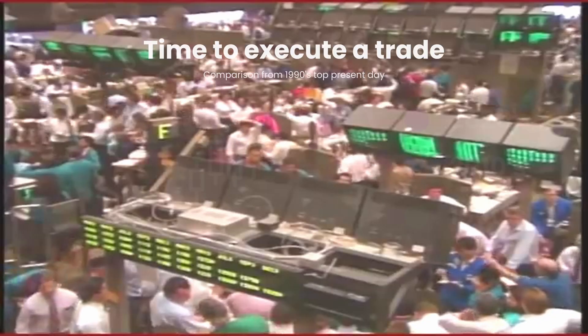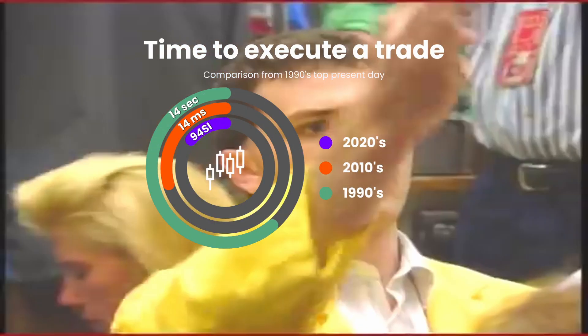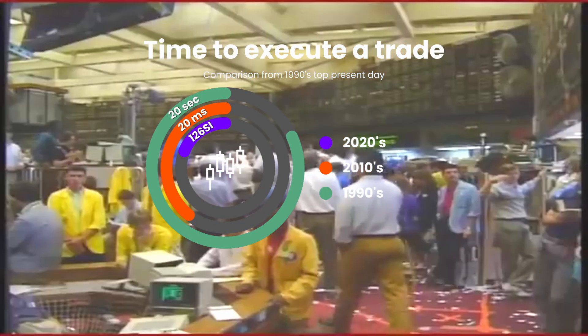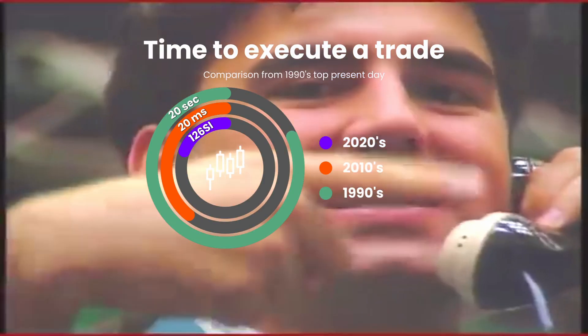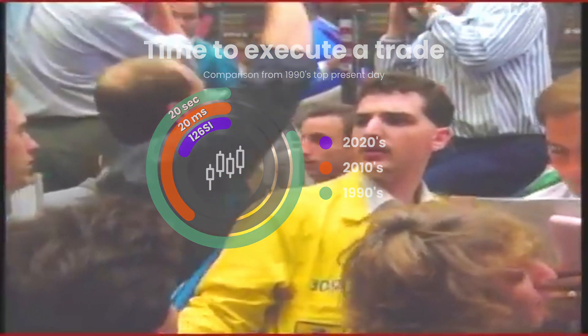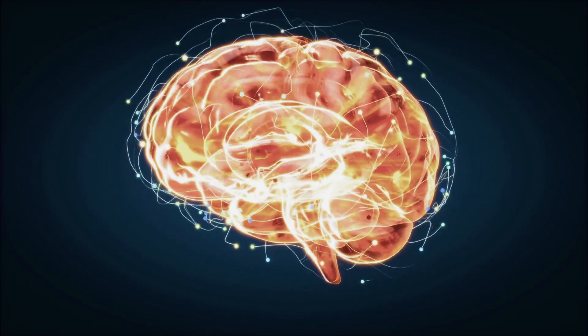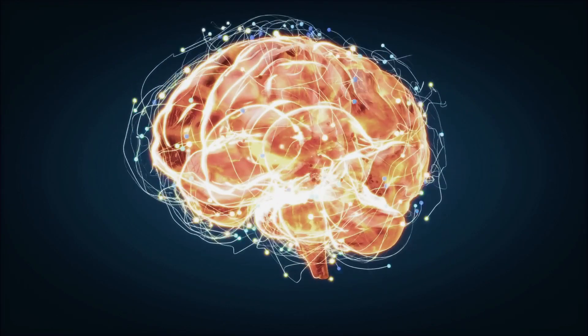Let's put this in perspective. In the 1990s, the average time to execute a trade was 20 seconds. By 2010, it was about 20 milliseconds. Today, we're talking microseconds. That's millionths of a second. The human brain can't even process information that fast.